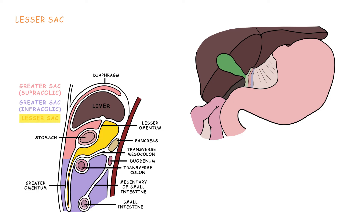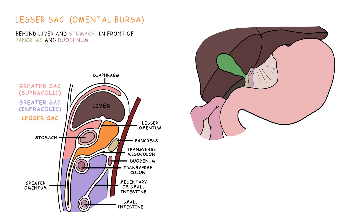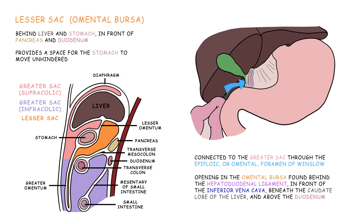The lesser sac, also called the omental bursa, is found behind the liver and stomach in front of the pancreas and duodenum. It provides a space for the stomach to move unhindered. It is connected to the greater sac through the epiploic, or omental, foramen of Winslow.